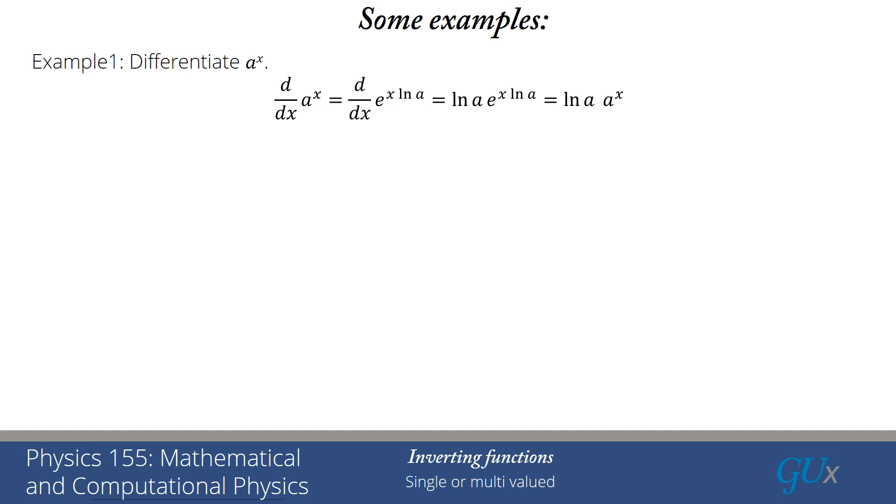The derivative of an exponential, I know how to differentiate. The derivative of an exponential is just the exponential multiplied by the derivative of its argument. The derivative of its argument, the argument being x log a is just log a, so I'm going to get log a e to the x log a, and that indeed just equals log a times a to the x.